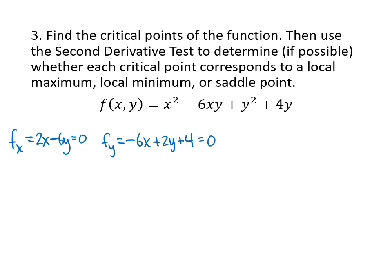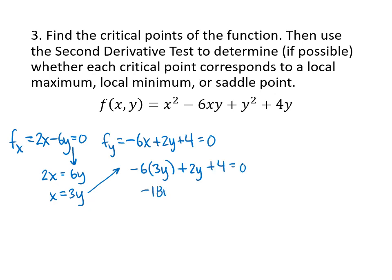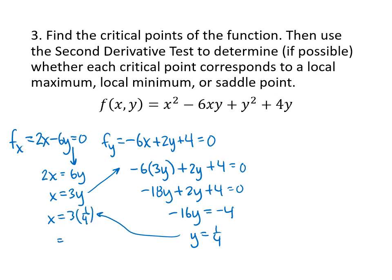We set them both equal to zero. Our strategy is to solve one equation for one variable in the easiest possible way. Here the easiest method is to solve the first equation for x: add 6y to both sides, divide by 2, and get x equals 3y. Plug that into the other equation: negative 6 times 3y plus 2y plus 4 equals 0, giving negative 16y equals negative 4, so y equals 1/4. Then x equals 3 times 1/4 equals 3/4. Our critical point is (3/4, 1/4).